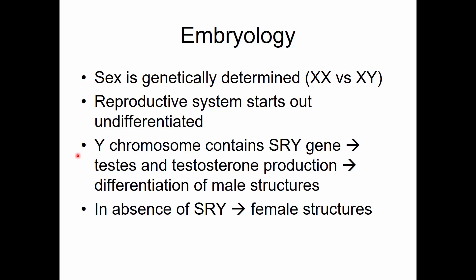Early in embryonic development, there is expression of the SRY gene on the Y chromosome. When that gene is expressed, the testes are stimulated to produce testosterone. That testosterone differentiates the male structures, called Wolffian tubules. There's also production of anti-Müllerian hormone, which causes degeneration of the female tubes. When the SRY gene is expressed, the embryo differentiates into a male. In the absence of SRY gene expression, the embryo differentiates into a female.